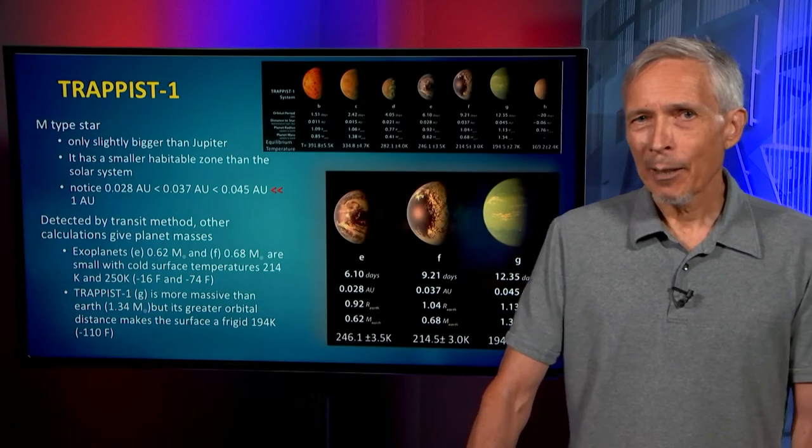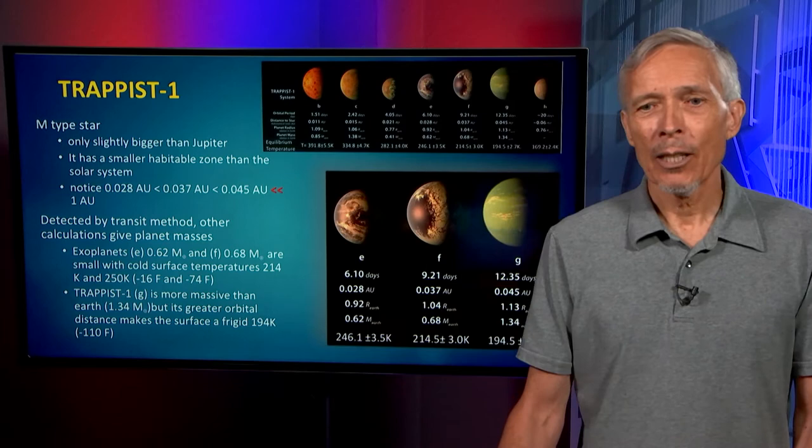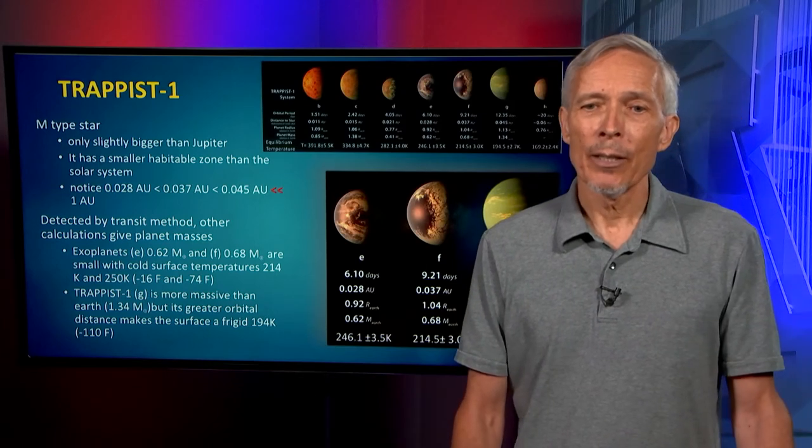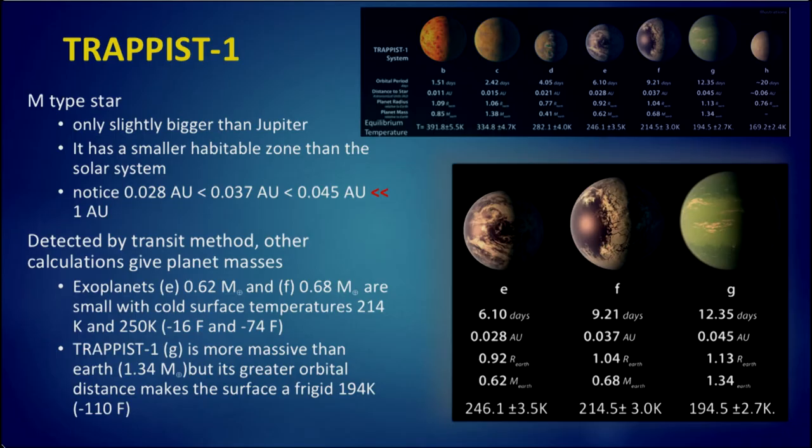More plausible and more exciting for the true prospect of biology is the TRAPPIST-1 system. This is an M-type star, so it's the most abundant type of star in the universe. The TRAPPIST system is very fascinating because it's indicative of a huge population of stars whose planet properties we've only just started to measure.